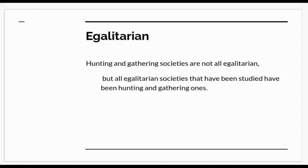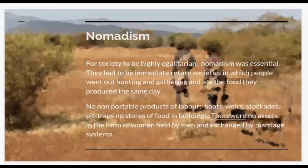This has consequences. As an unsettled society, hunting and gathering societies tend to be egalitarian. They're not all egalitarian, but all the egalitarian societies that anthropologists have studied have been hunting and gathering ones. And nomadism was essential to that. For society to be highly egalitarian, it has to be nomadic — people have to have no more than they can carry. If your possessions are limited to what you can physically carry, it's impossible for private property to extensively develop. They are also immediate return societies, where people went out hunting and gathering and ate the food they produced the same day, so there's no big stores of food that can be monopolised.